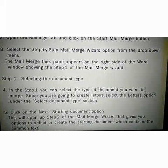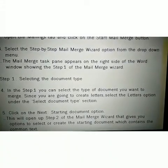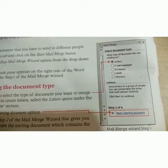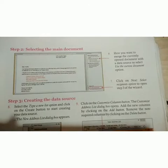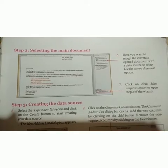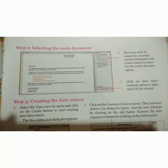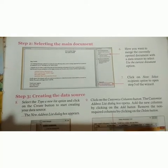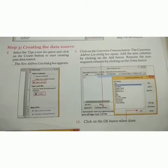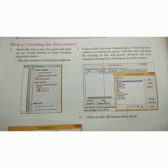This is the Mail Merge Wizard Step 1. Next, Step 2: Selecting the Main Document. Here, to merge the currently opened document with a data source, select the Use the Current Document option. Then, Step 7: click on Next — Select Recipients — to open Step 3 of the Wizard. Step 3 is Creating the Data Source. Step 8: select the Type a New List option and click on the Create button to start creating your data source. The New Address List dialog box appears.